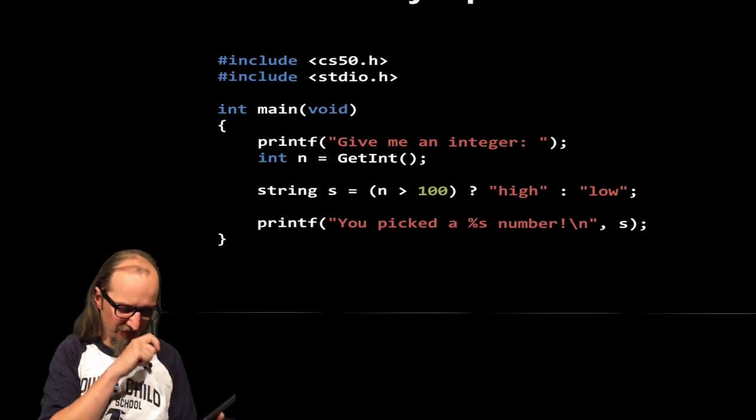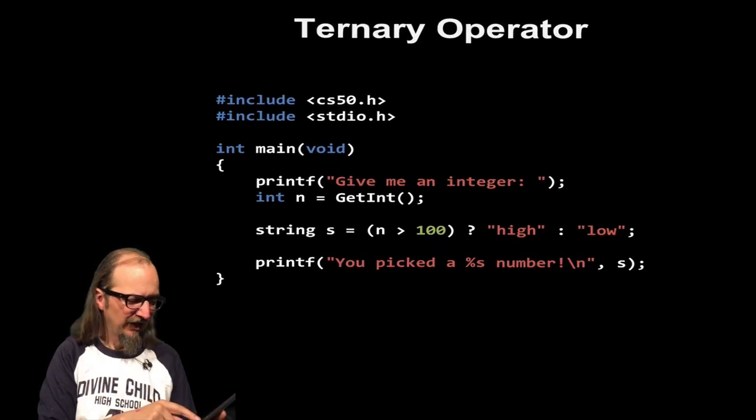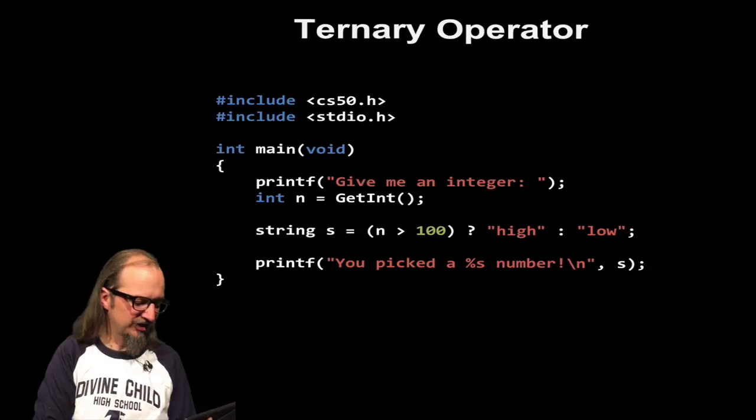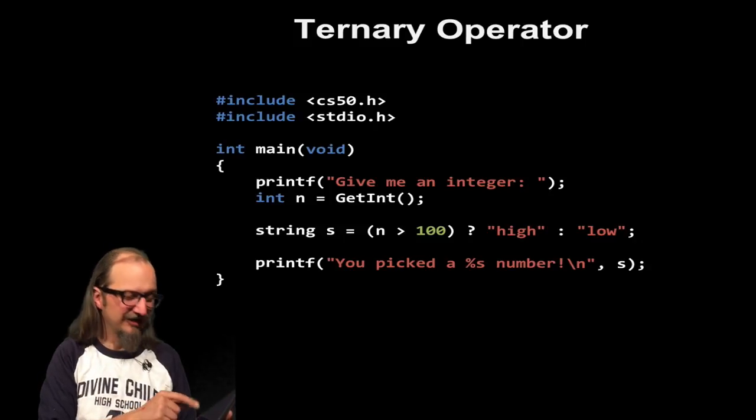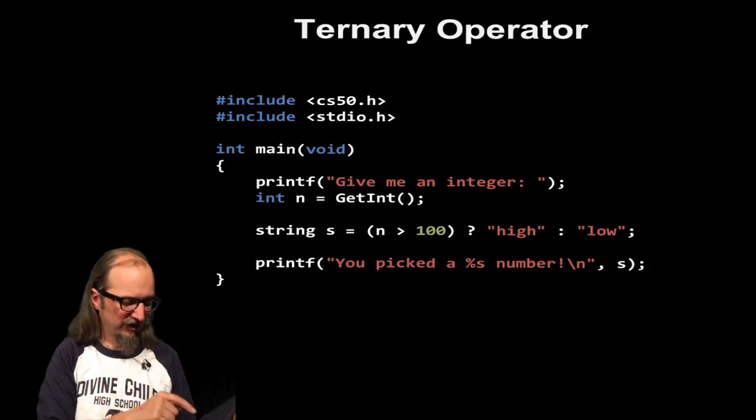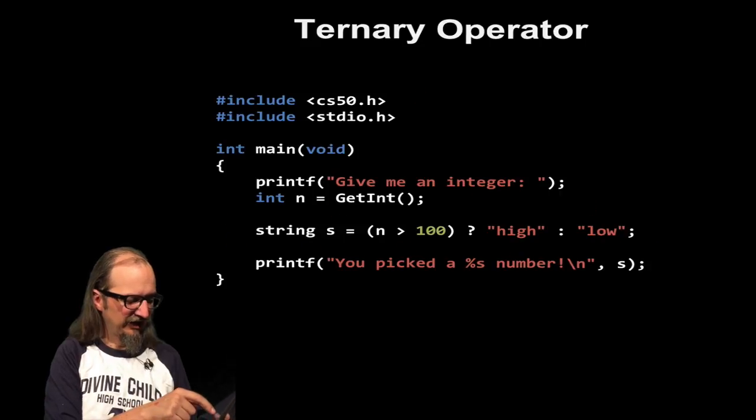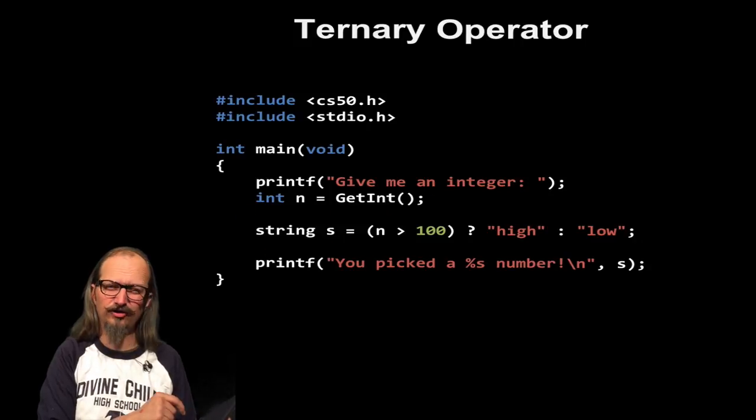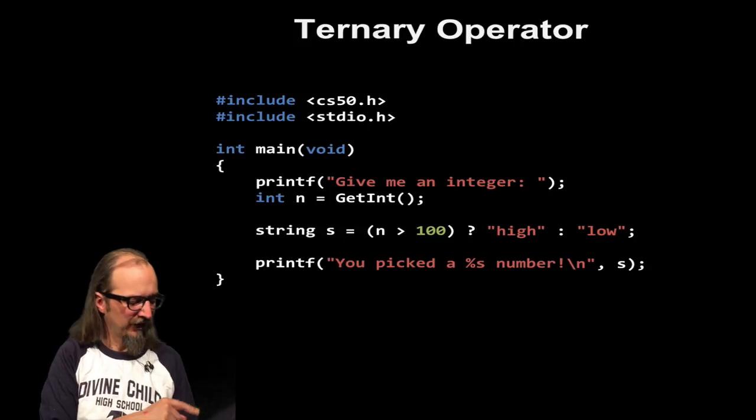One last one, I just want to touch on very briefly. And that's ternary operators. So what this does is you'll see this is kind of like an if statement, but it's a little different at the same time. So what I'm going to have here, here's our ternary operator. And I need my CS50 and standard IO.H in order to be able to do things like get integers and also have string as a data type.